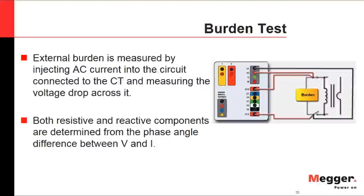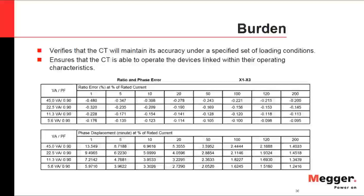The burden measurement is straightforward: connect the test set to the leads going downstream from the CT and measure directly the complex impedance of the burden. The test set then provides ratio and phase error information as a function of percentage rated current — from 1% all the way up to 200% rated current — at various VA levels such as 100%, 50%, and 25% of rated output.